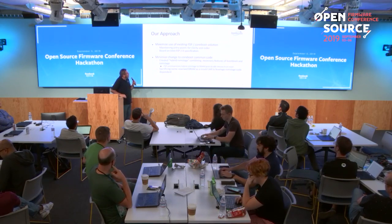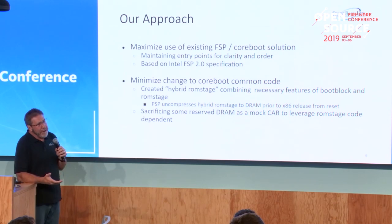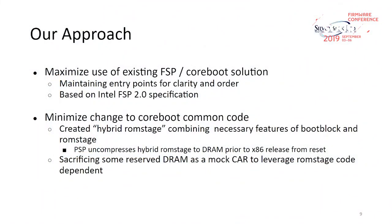We have tried to maximize our use of the existing FSP. We still use FSPM as a naming convention — it still has the same entry points, but we don't necessarily do the same things Intel does in that call. We created the hybrid ROM stage. To satisfy the dependencies there, we actually reserve a little piece of memory, build what looks like cache-as-RAM, let CoreBoot tear it apart for us, and then throw it away. This has not proved to be a popular solution, so we're currently rethinking and reworking it.